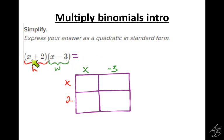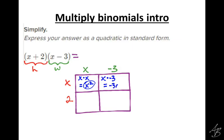The answer to this problem — height times width is area — is going to be the area of this whole big rectangle. We're going to find that by finding the area of each small rectangle. The height is x and the width is negative 3, so that gives us negative 3x. The height is 2 and the width is x, so that gives us 2x. The height is 2 and the width is negative 3, so the area is negative 6.